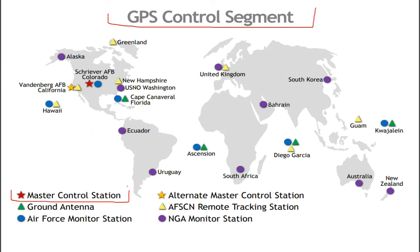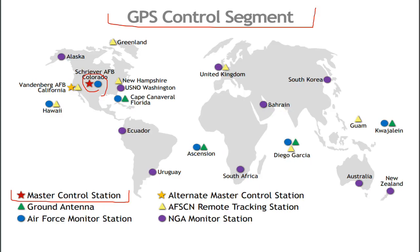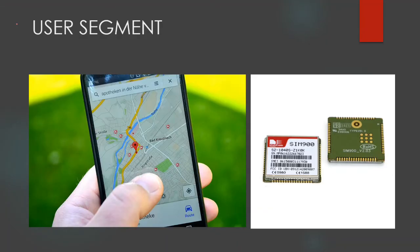The GPS control station is in Colorado and includes 5 monitor stations, 3 ground antennas, and a backup control system. This control segment uses S-band to communicate with satellites and controls all the satellites.